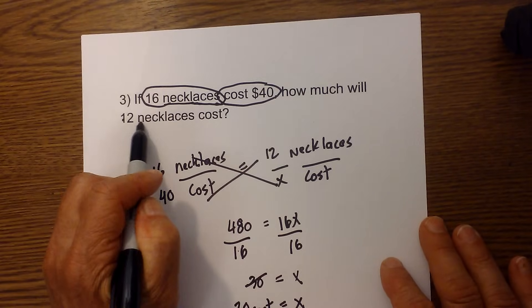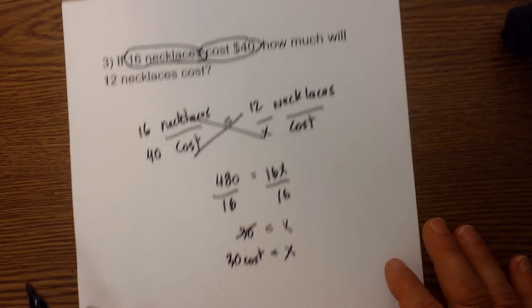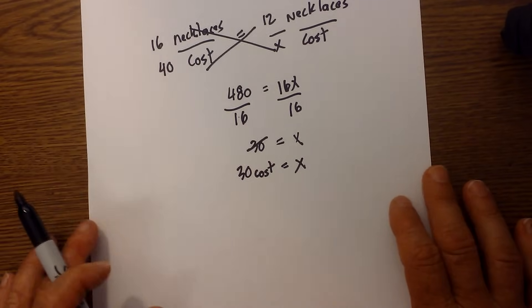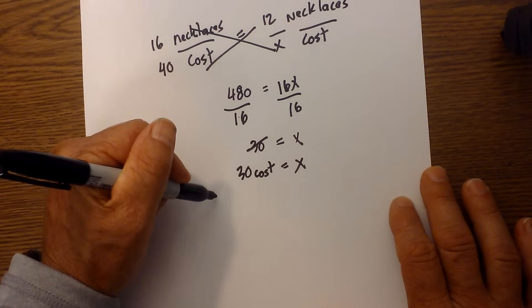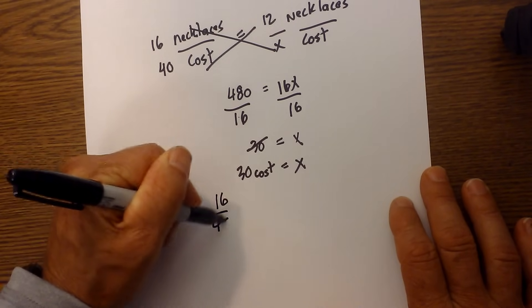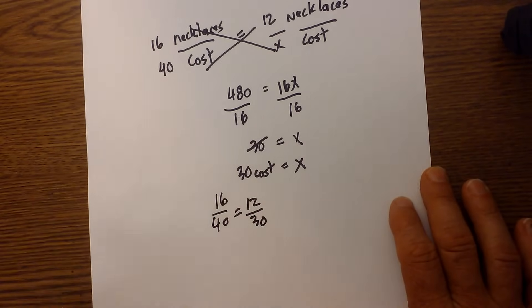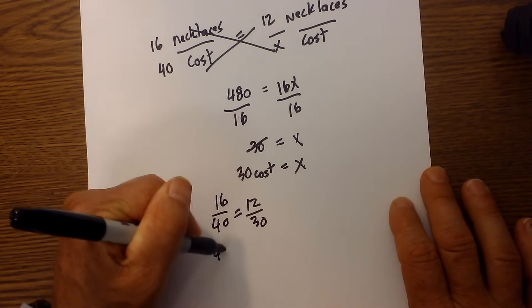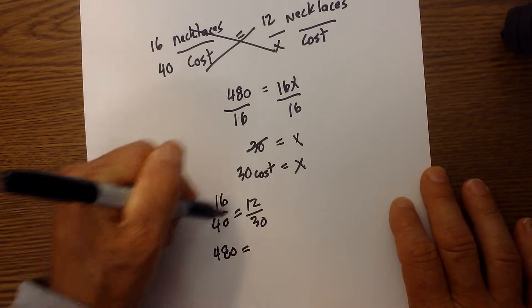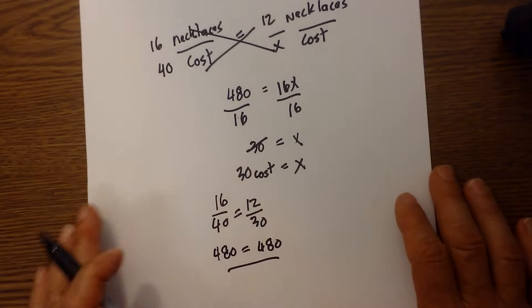Okay, I will then check my work. So I have 16 over 40 is equal to 12 over 30. 30 times 16 is equal to 480, and 40 times 12 is 480 also.